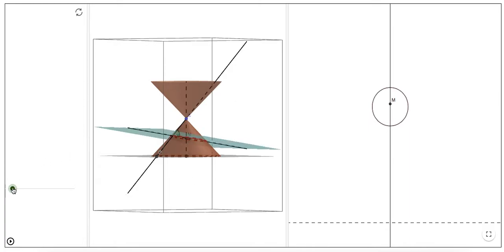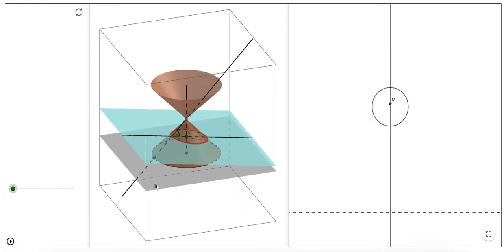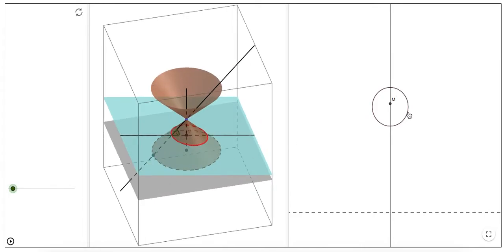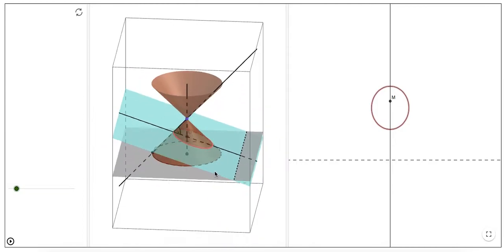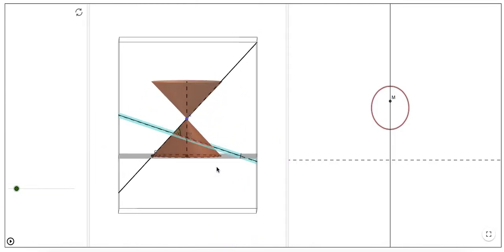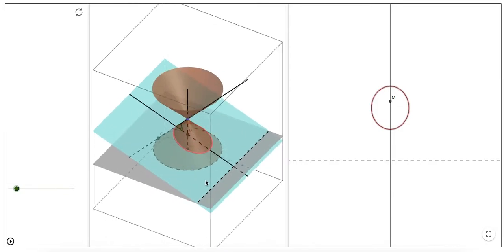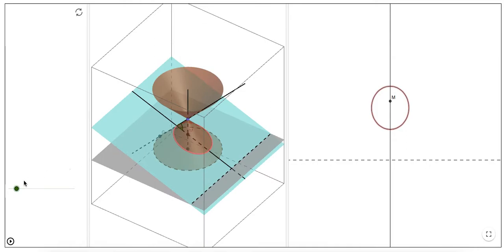As I increase the angle of that cut, notice the shape is getting more elongated, becoming more and more elliptical. As I increase the slice, the shape becomes more elliptical. If I rotate, you can see the slice going through, and we get our ellipse.